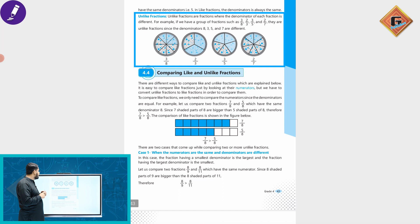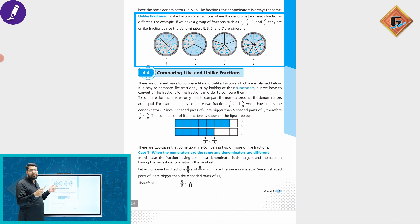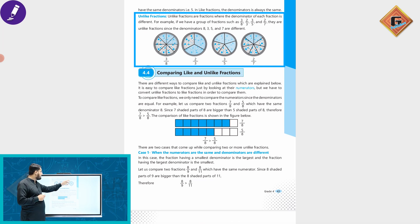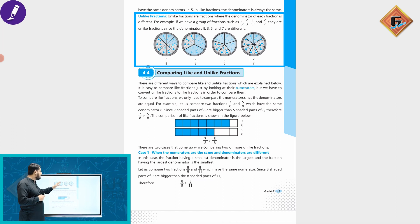Unlike fractions are fractions where the denominator is different — each fraction has a different denominator. For example, if we have a group of fractions such as 3/8, 2/3, 3/5, and 2/7, they are unlike fractions since the denominators 8, 3, 5, and 7 are all different.